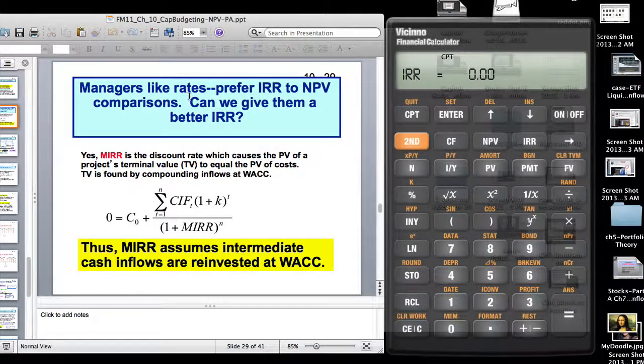They know that managers like rates. They don't like dollar amounts. And especially corporate managers. Small business owners think in dollar terms. They prefer IRR to NPV. Can we give them a better IRR? Yeah. It's called a MIRR. This is something you guys need to know, especially grad students.